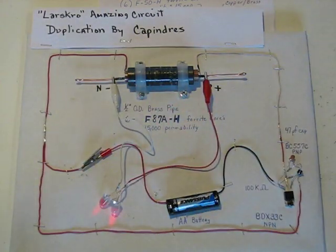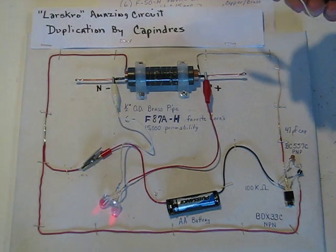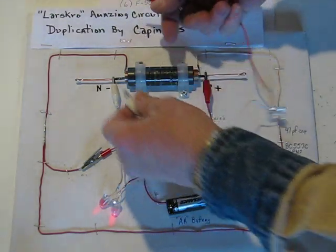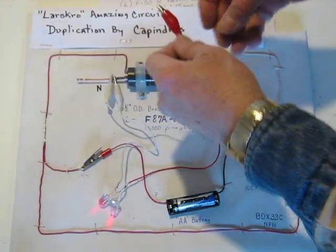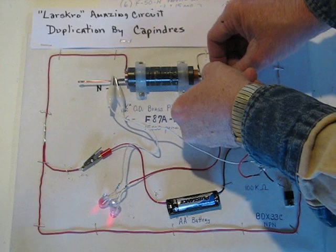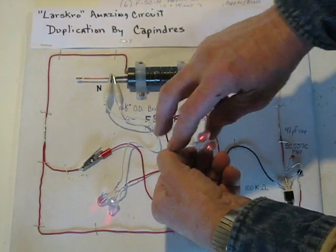So it acts much like a resistor, and for that reason I've been calling this core here a ferrite tube resistor, is what I've been calling it.